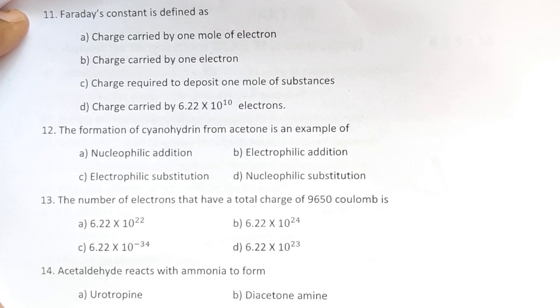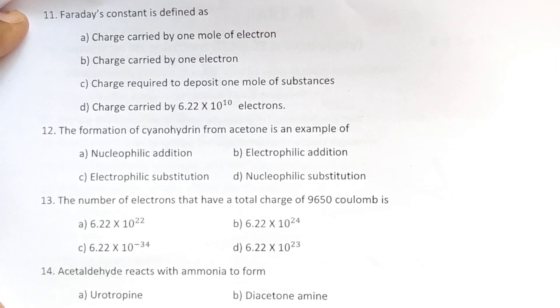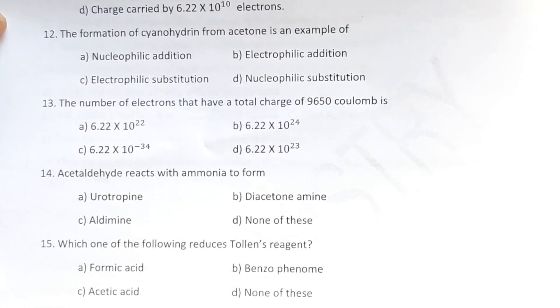Thirteenth one, the number of electrons that have a total charge of 9650 coulombs is. Fourteenth one, acetaldehyde reacts with ammonia to form. And fifteenth, which one of the following reduces Tollens' reagent?